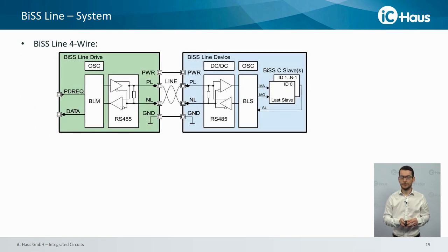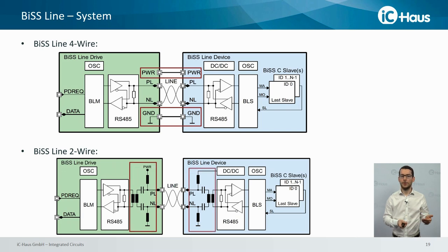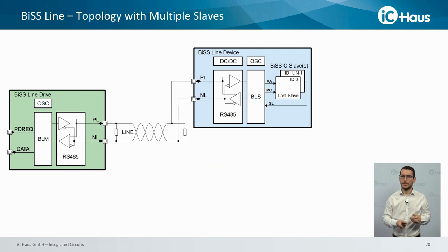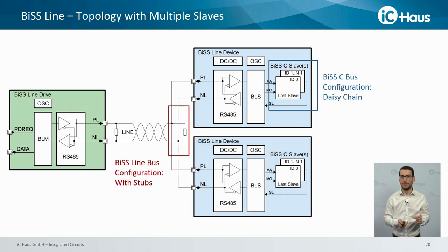There are two topologies available for BiSS line. The first is the four-wire system, where power and data are transmitted on separate lines. The alternative is the two-wire configuration, where only two wires are required to send both power and data. However, additional components are required on both the BiSS line master and slave sides to perform modulation of the DC and AC signals. BiSS line allows integrating multiple slaves connected to the BiSS line master — either several BiSS-C slaves connected in a daisy chain to one BiSS line slave, or several BiSS line slaves connected with short stubs to the transmission line.